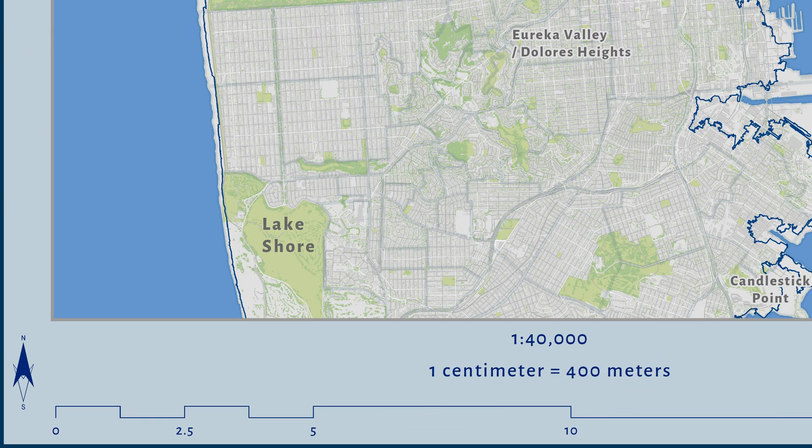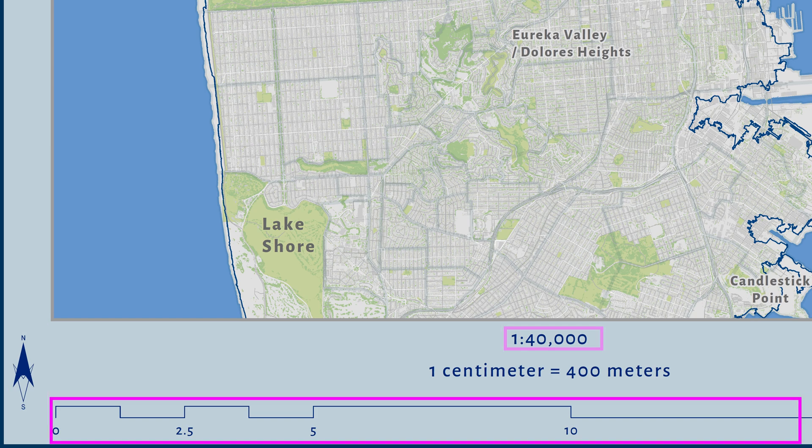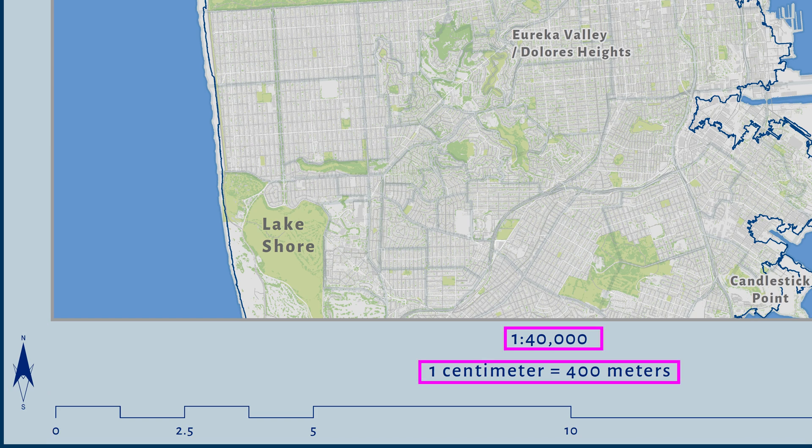In the margins around the map, include a north arrow, a scale bar, a representative fraction, and a word statement. The last two can be found on the Insert menu under Scale Text.